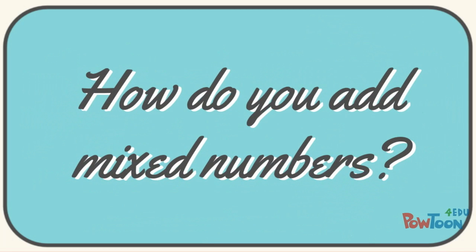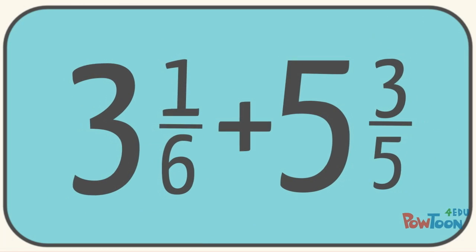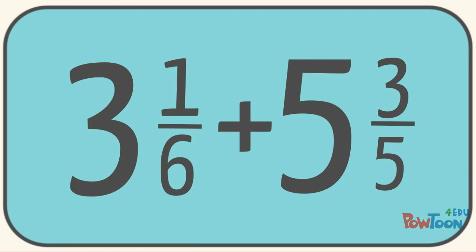How do you add mixed numbers? Let's look at this problem: 3 and 1 sixth plus 5 and 3 fifths.